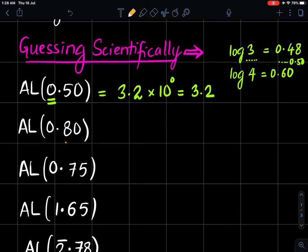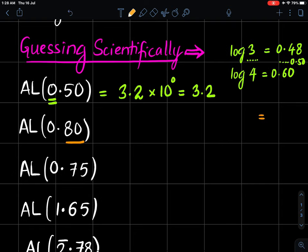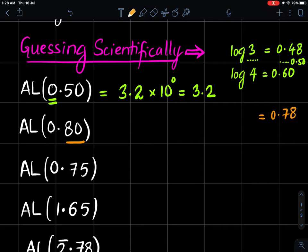Coming to next, 0.80. Do you remember anyone's log is very close to 0.80? 0.78 is log of 6 and 0.84 is log of 7. But we are looking at 0.80—that means you are looking at a number slightly greater than 6. You can say 6.2 or 6.3.